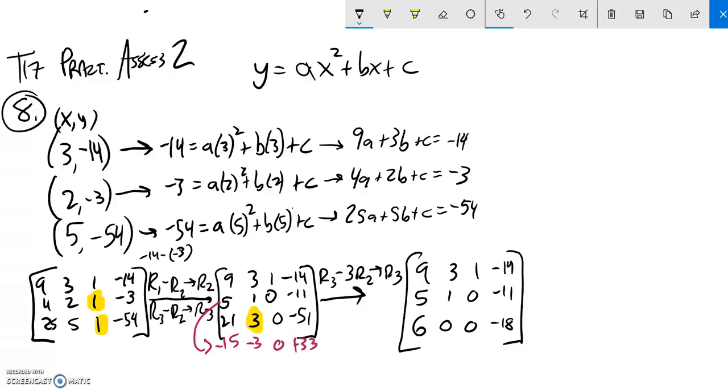So I know my a value. 6a is negative 18. So a must be negative 3. I can use that to get my b value. I'll just plug it into here. So 5 times a plus b is negative 11. Negative 15 plus b is negative 11. Add 15 to both sides. Looks like b is 4.